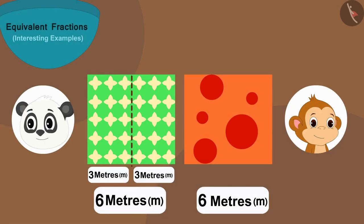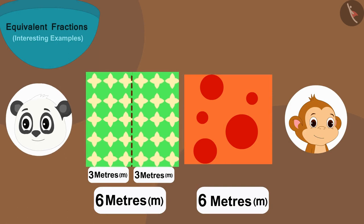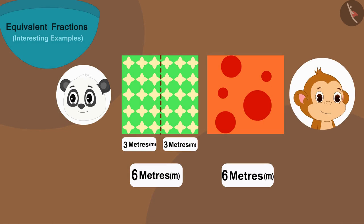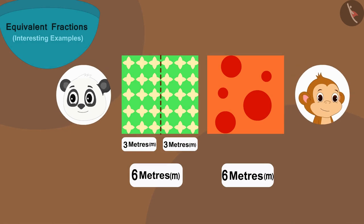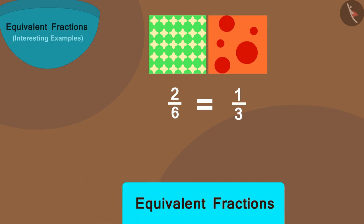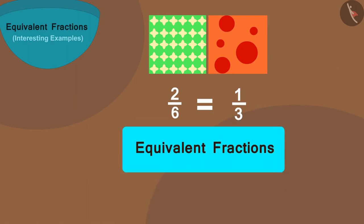So Golu has given Babban two times three, or six metres of cloth — equal length. Here the lengths of Babban and Golu's cloth are the same, and one-third of Babban's cloth is equal to two-sixths of Golu's cloth. Therefore, these fractions are equivalent fractions.